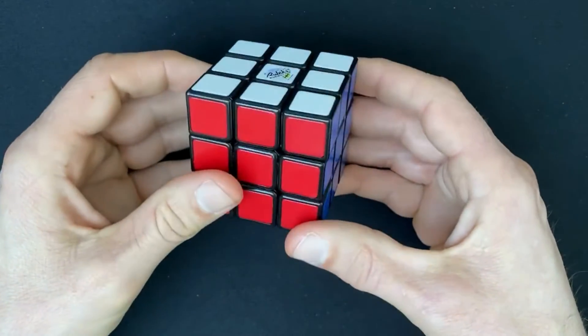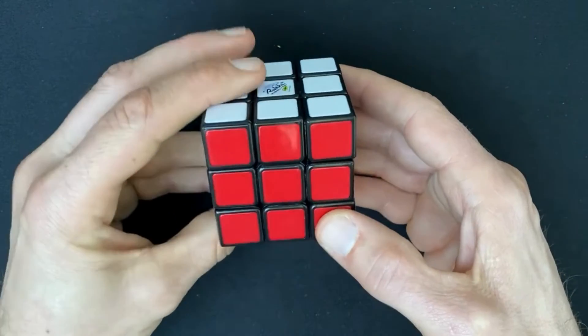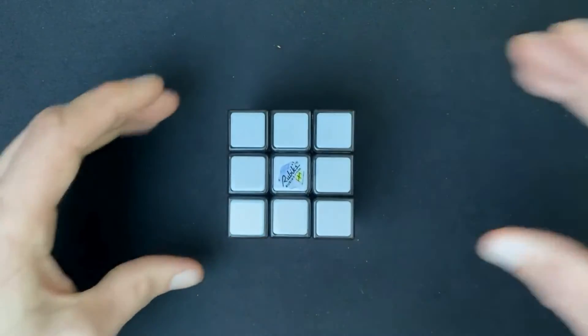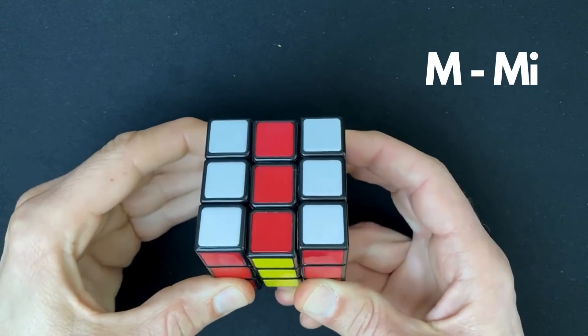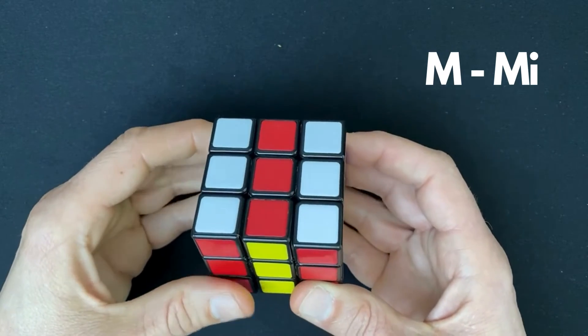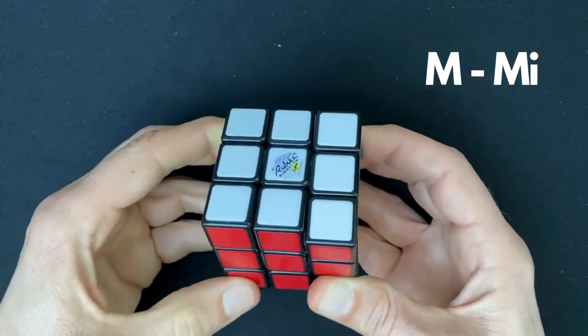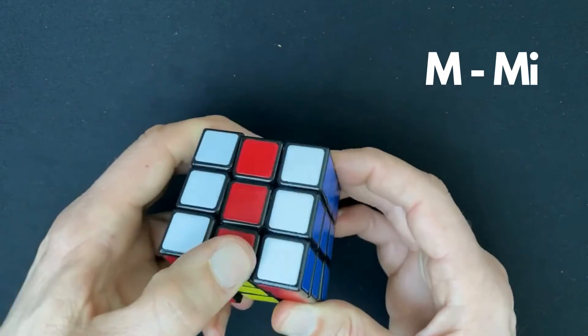And these are the most important rotations of the cube. And there are two left, and those are the two middle layers. So the middle layers indicated with an M, and that's this one. It's M. You only rotate the middle layer. And M inverted. So M, M and M inverted.